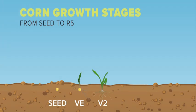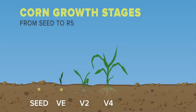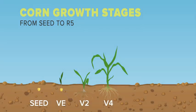The V3 stage marks the end of the seed being the main food source and the beginning of the photosynthetic process.